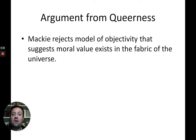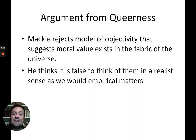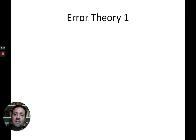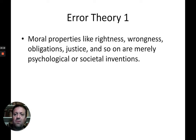Mackie rejects a model of objectivity that suggests moral value exists in the fabric of the universe. He thinks it is false to think of moral judgments in a realist sense. That is essentially Mackie's argument from queerness, used to show that moral irrealism is the most sensible theory to adopt — that morality is ultimately subjective. This is closely related to what he calls his error theory. Moral properties like rightness and wrongness, obligation, justice, and so on, he thinks are merely psychological or societal inventions.